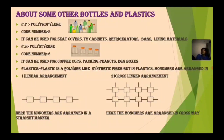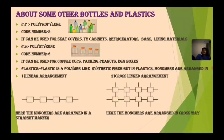Plastic is a polymer like synthetic fiber, but in plastic, monomers are arranged in two forms: linear arrangement and cross-linked arrangement. In linear arrangement, the monomers are arranged in a straight, linear way. In cross-linked arrangement, the monomers are arranged in a criss-cross way.